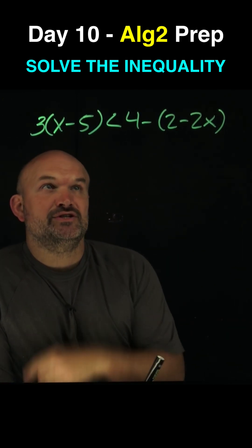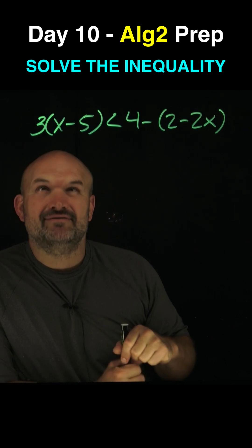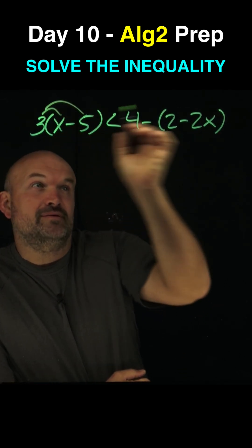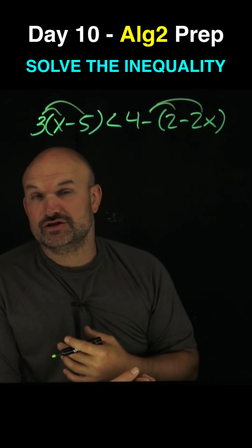Day 10, I'm getting ready for Algebra 2. So in this case, we have a multi-step inequality. I don't like having these parentheses in here. I need to get rid of them. That's always going to be our first step. To get rid of the parentheses, just apply the distributive property.